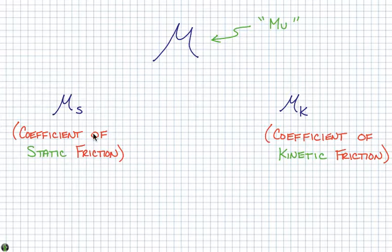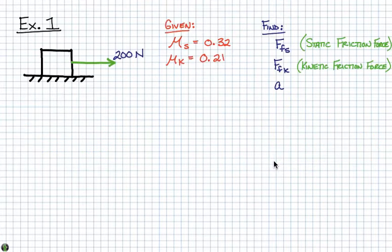The friction needed to set an object in motion, and the friction resisting an object that is in motion — that's the main difference between our two coefficients of friction.